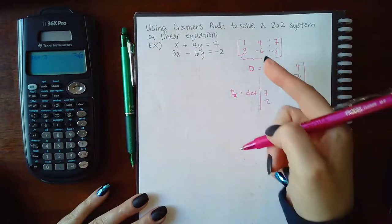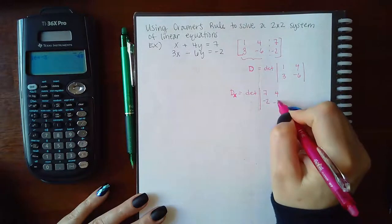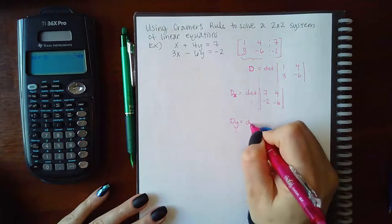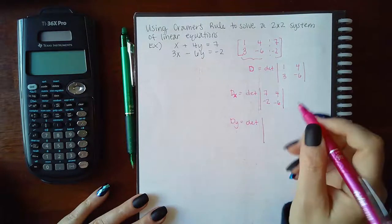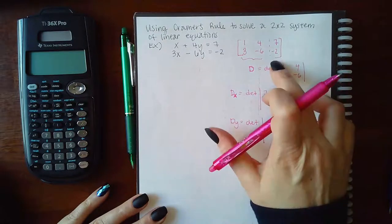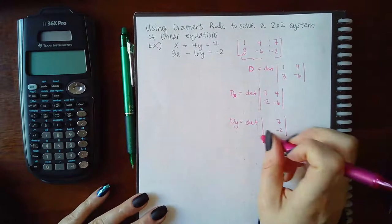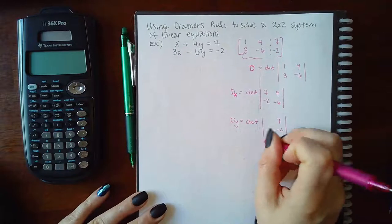So instead of the X column, you're going to put the constants. But the Y column is going to stay the same. And then now you have DY, and that's the determinant of, again, the Y column is now going to become the constants.